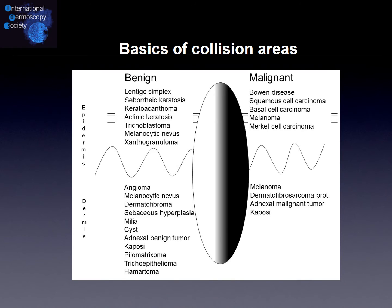When we move to malignant lesions from the dermis, you can also find melanoma — remember the dermal nevus which can switch into melanoma — dermatofibrosarcoma protuberans, and adnexal malignant rare tumors and malignant Kaposi's sarcoma.